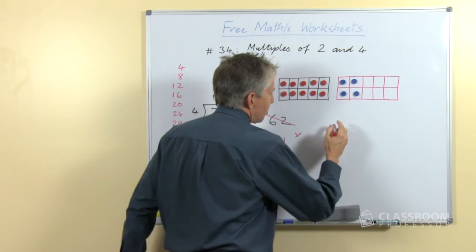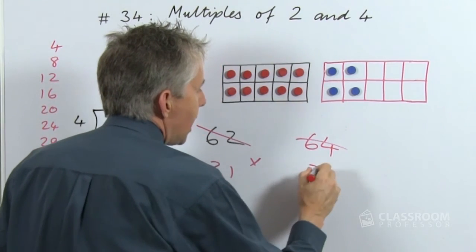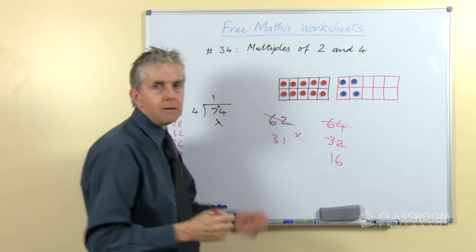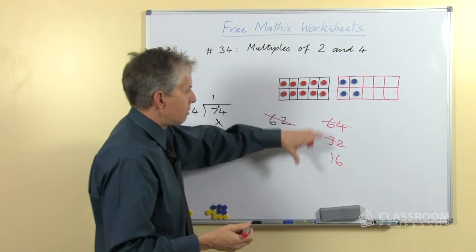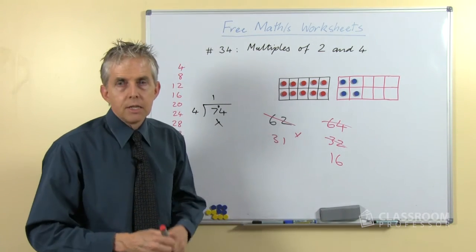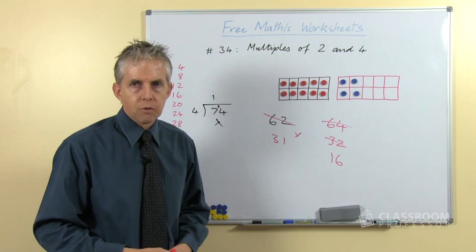Let's take one that is a multiple of 4, let's say 64. Halve that we get 32, halve that we get 16. That's an even number, we could halve it twice and so 64 must be a multiple of 4.